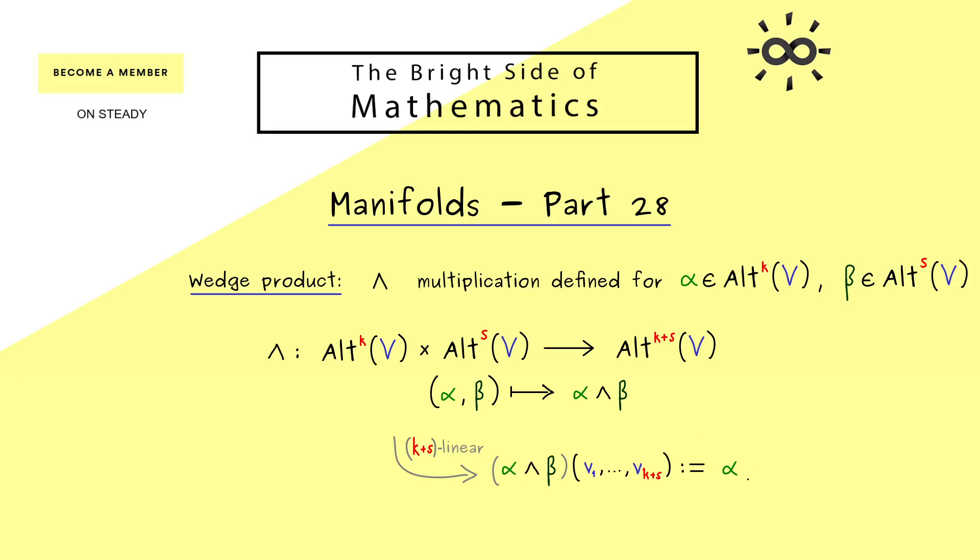And now the question is, how would you define this number here by using alpha and beta? So obviously we could just use alpha, putting in k vectors, and then we multiply with beta where we use s vectors. More concretely here, we go from v_(k+1) to v_(k+s).